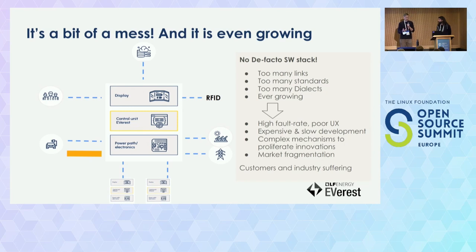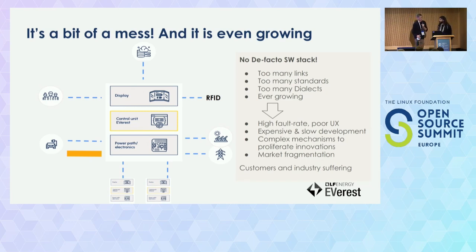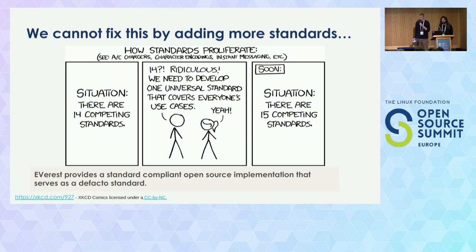So, how can we fix it? We can definitely not fix it by adding more standards. What we want to do with Everest is provide a holistic reference implementation as a de facto standard for charging stations for electric vehicles. This implementation should cover all of the communication I just showed you — which is a lot — and this is basically what Everest is. Every charging station manufacturer and every EV supplier has to implement the same things, and there is really a lot out there. Everest aims to solve that.